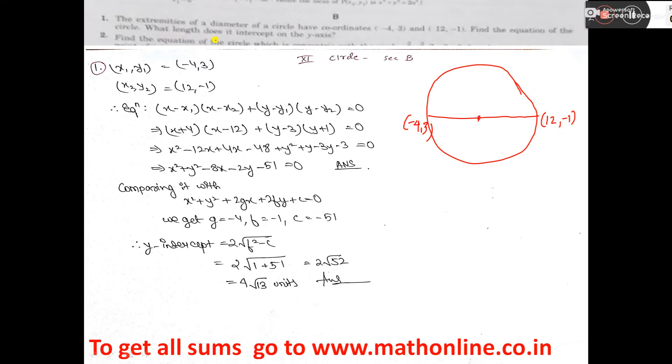What length does it intersect on the y-axis? So two parts are there. First, let us find the equation of the circle. If endpoints are given of a diameter, then equation is (x - x1)(x - x2) + (y - y1)(y - y2) = 0.